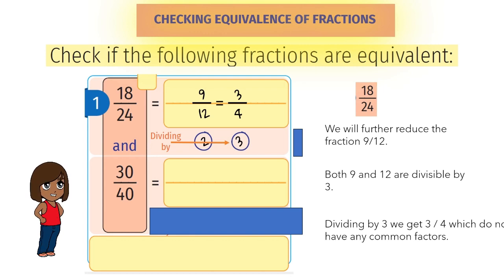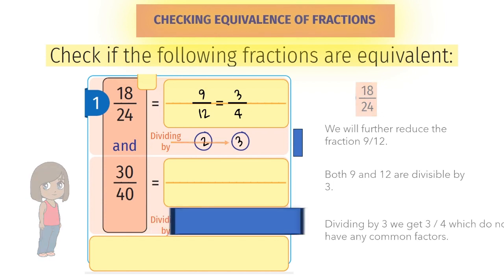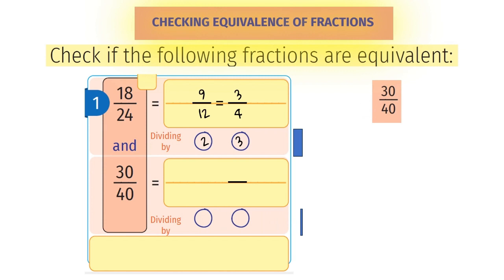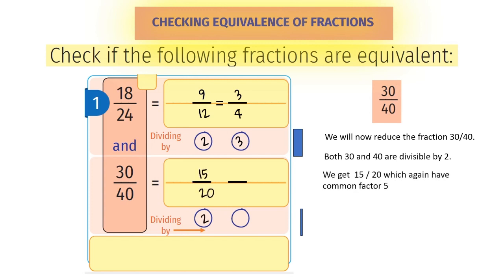The second fraction is 30 by 40. Dividing by the common factor 2, we get 15 by 20. Dividing again by common factor 5, we get 3 by 4.